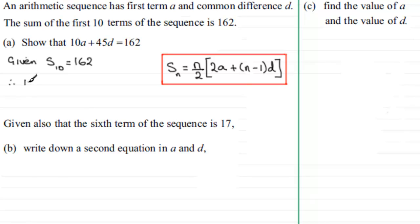10 over 2 multiplied by twice the first term. We're told the first term is A, so that'd be 2A plus N minus 1 times D. Well, N minus 1, that's going to be 10 minus 1, or in other words, 9 times D. And so this total is going to equal 162.